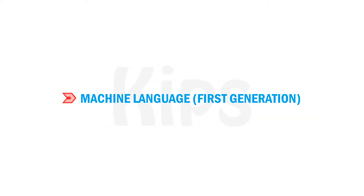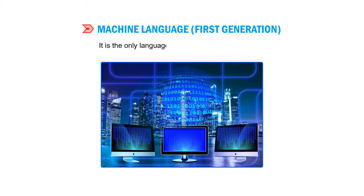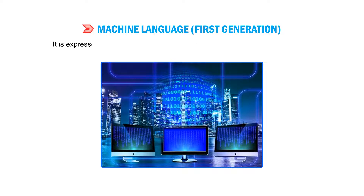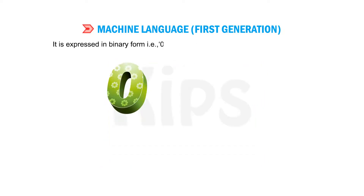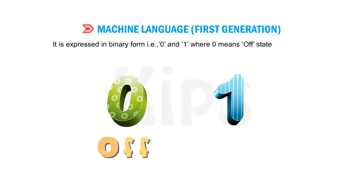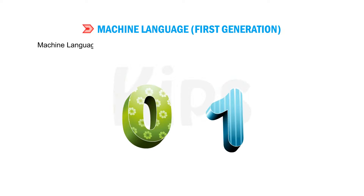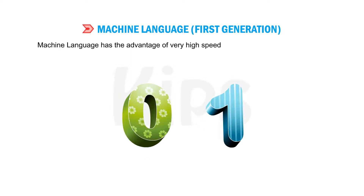Let's learn about machine language — first generation language. It is the only language that a computer understands. It is expressed in binary form, that is zero and one, where zero means off state and one means on state. Machine language has the advantage of very high speed and very low memory utilization.